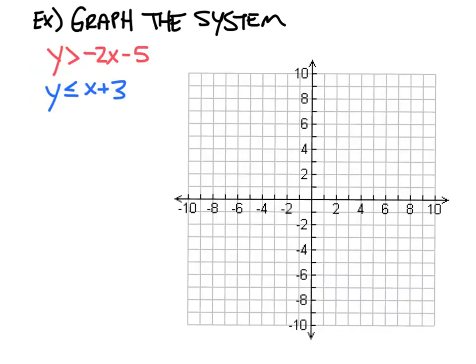Let's look at an example. Here we have y is greater than negative 2x minus 5 and y is less than or equal to x plus 3. First, let's focus on y is greater than negative 2x minus 5. That is a slope of negative 2 and a y-intercept of negative 5. So I'm going to go to negative 5, and then my slope is negative 2, so I can go down 2 over 1 or up 2 and back 1.